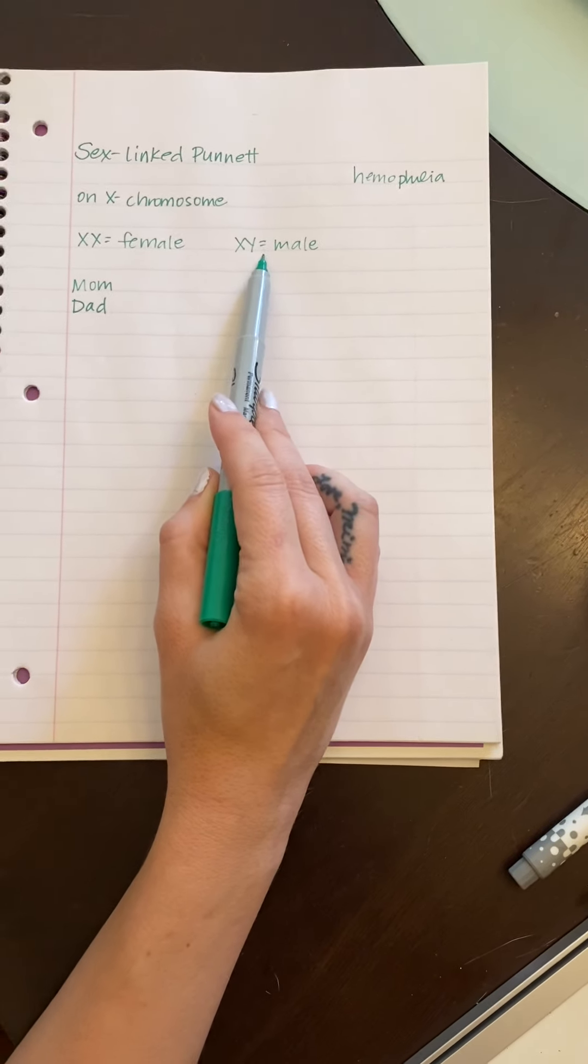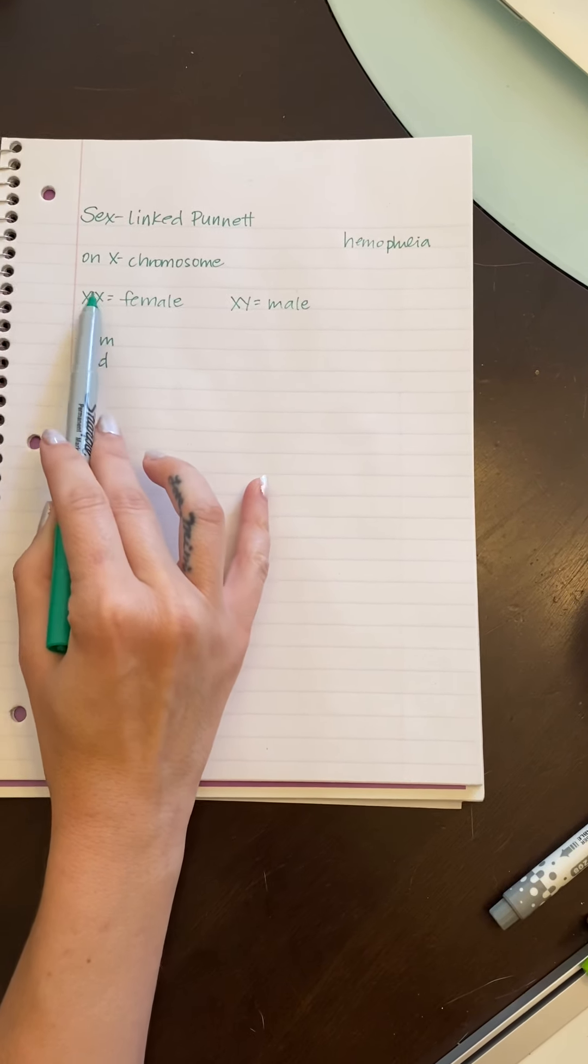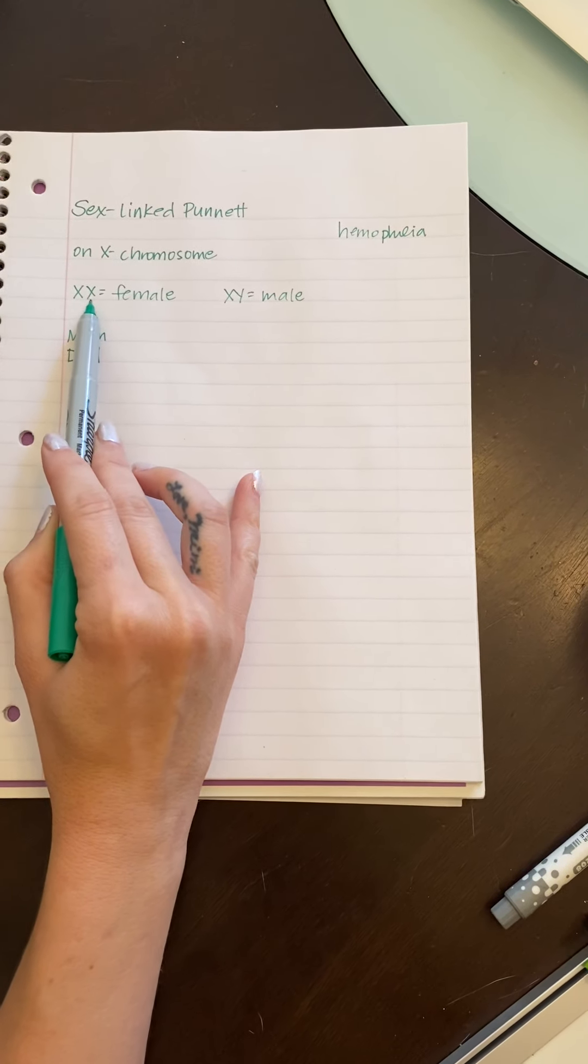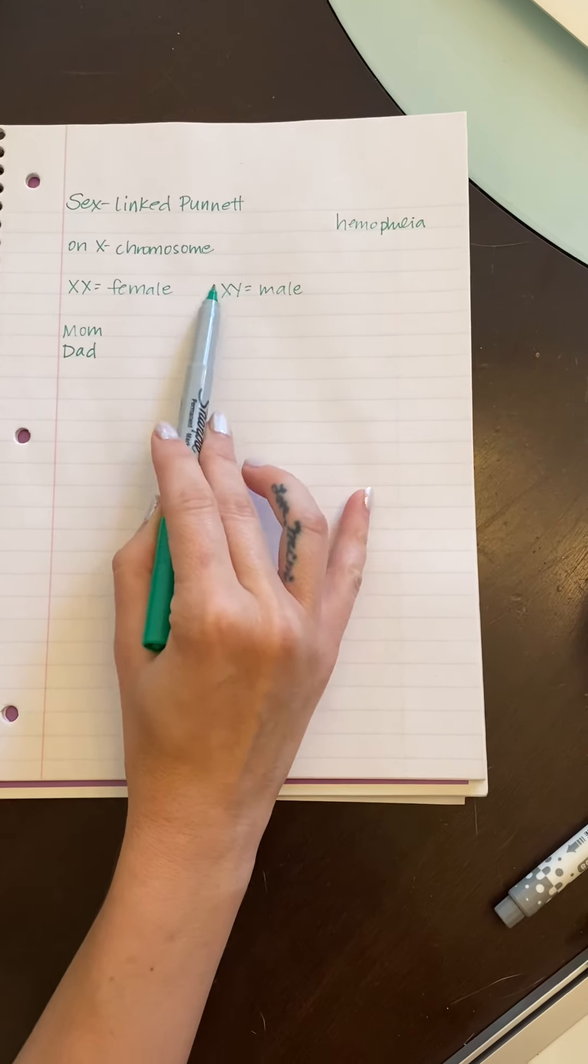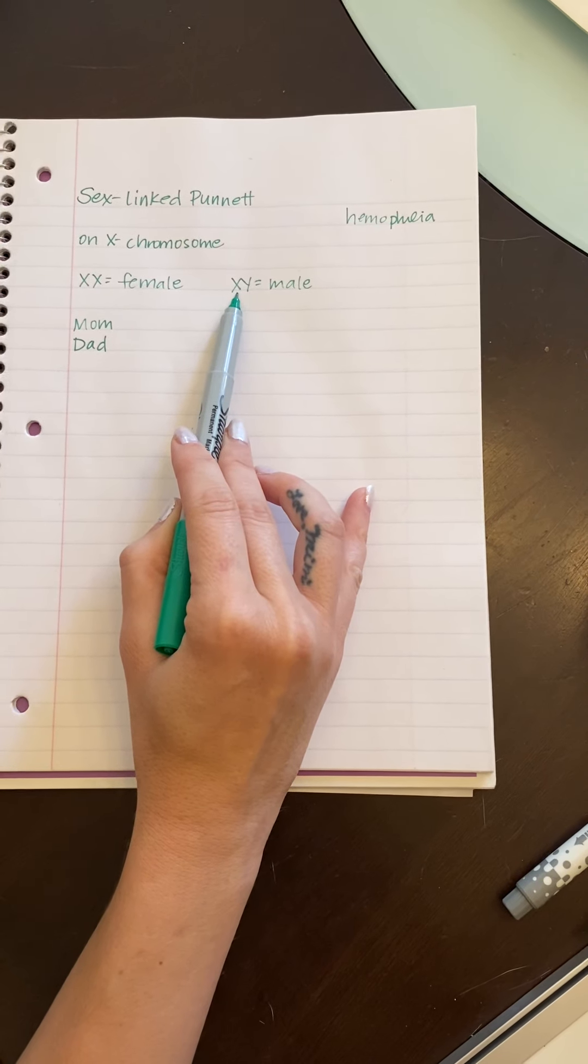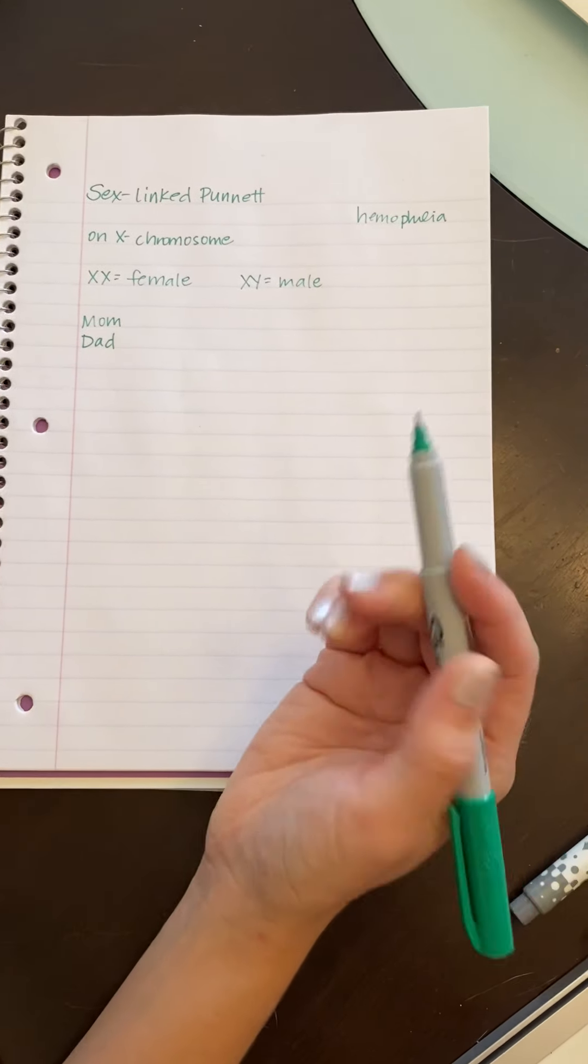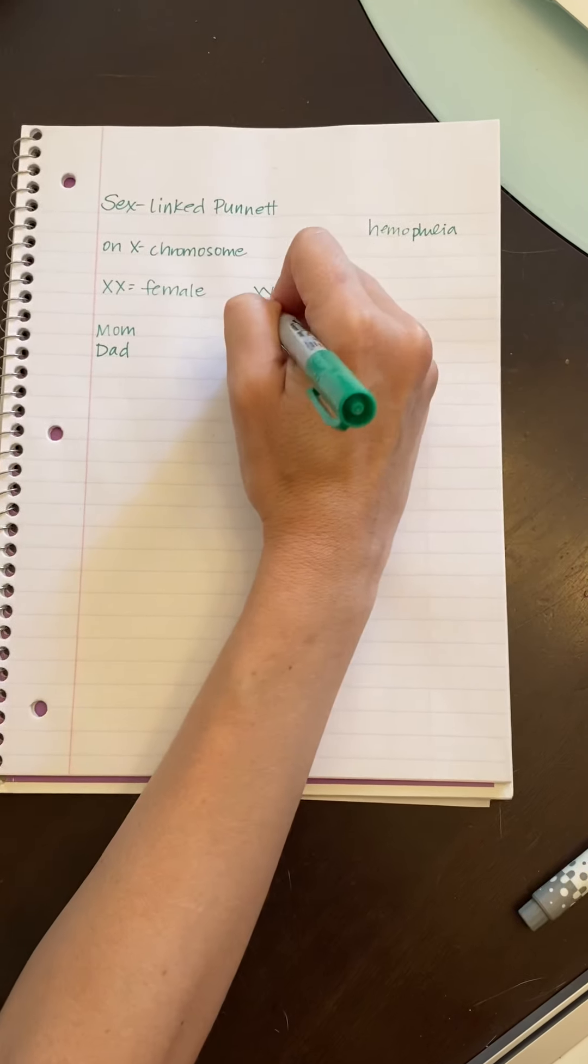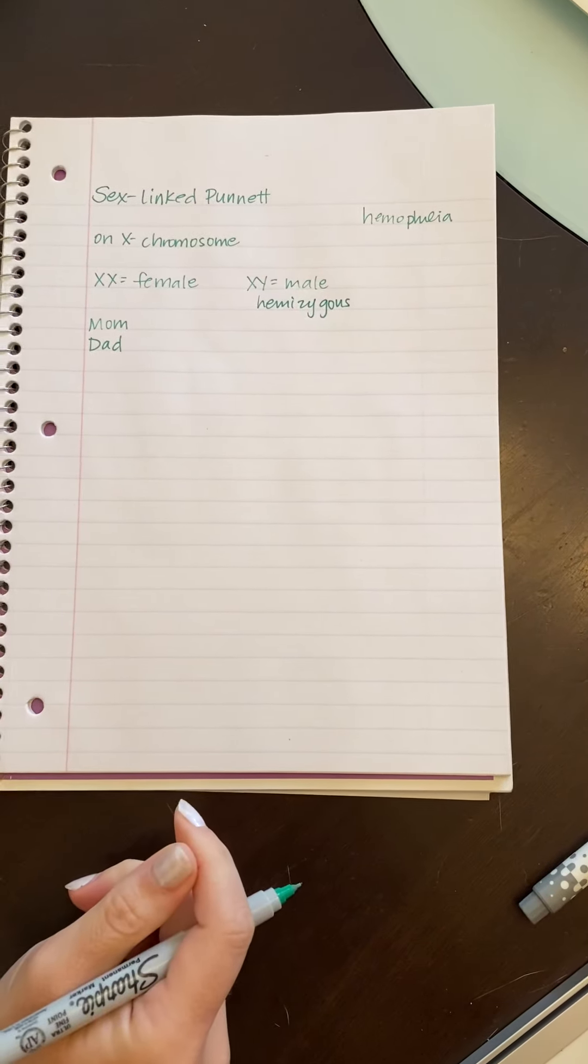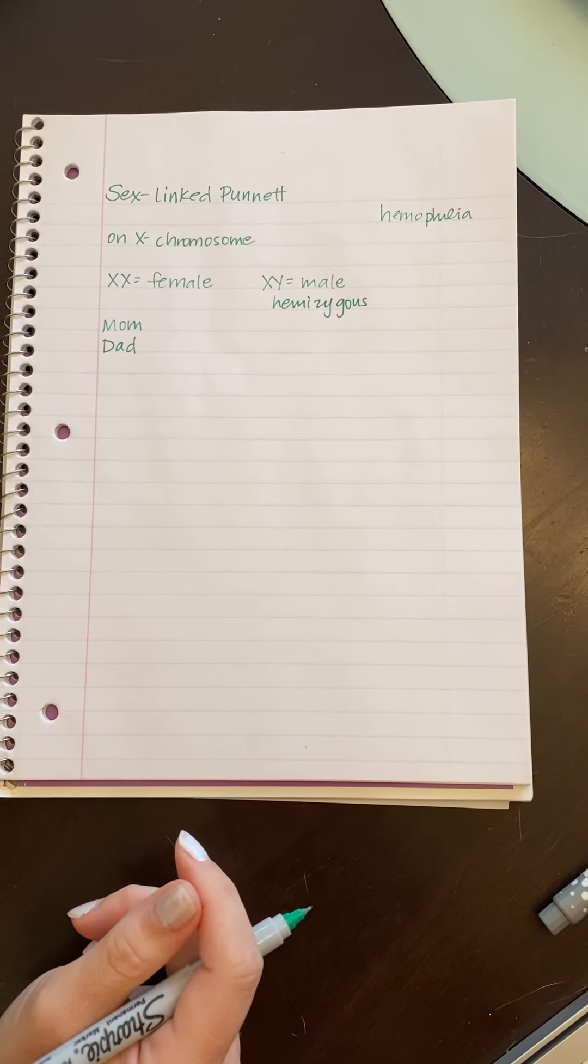But actually, males get these more often and that's because if a female has one X that is affected by this recessive trait, the other healthy X will take over. However, for a male, he only has one X. So if that X is affected, he's going to have the actual disease. If the X is healthy, he'll be healthy. So he basically has a 50-50 chance and this is called being hemizygous, meaning he only has one X. And so it makes him have a higher chance of getting one of these traits.